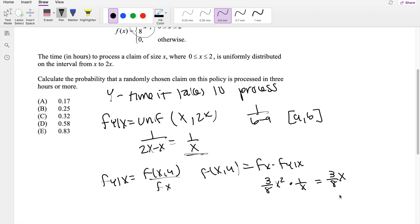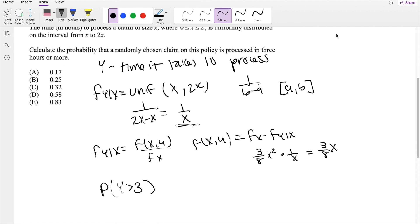And then we're asked to calculate the probability that a randomly chosen claim on this policy is processed in 3 hours or more. So we know y is the time it takes to process, so they're basically asking what is the probability that y is greater than 3 hours.